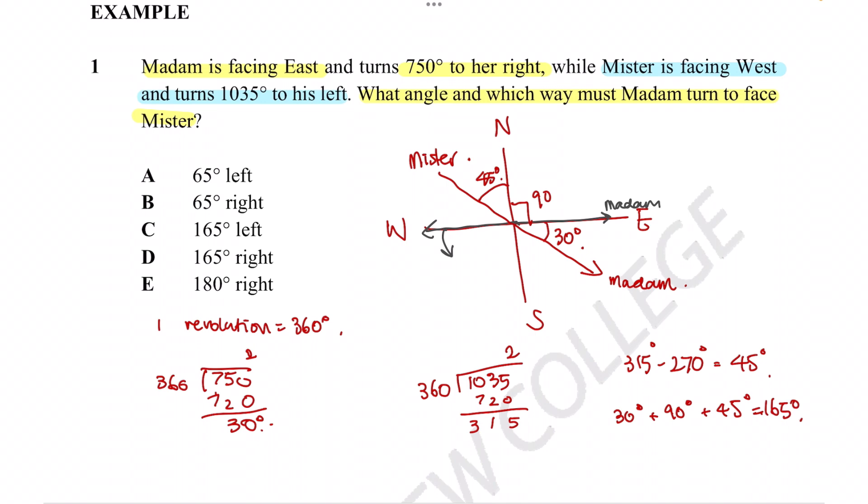Just to double check, let's see how much she turns if she turns the other way. This side would be 60 degrees, this side is 90 degrees, and this side is 45 degrees. So 90 plus 60 plus 45 is equal to 195 degrees. So clearly this first direction was the direction she needs to turn to face Mister with the least amount of turning required. So that was to Madam's left. So that would be answer option C.